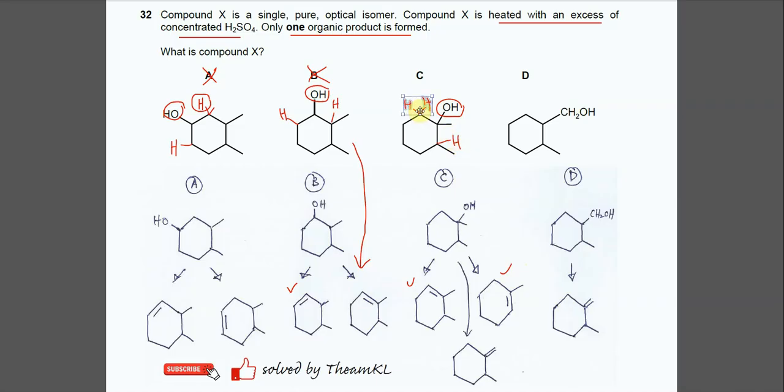And this OH also can remove together with one of the hydrogens here. Actually, here is a methyl group and it has three hydrogens. So once the OH is removed with one of the hydrogens here, it will form this last alkene.